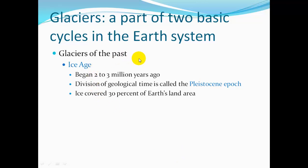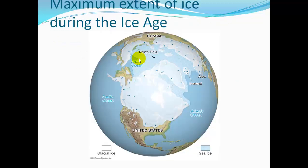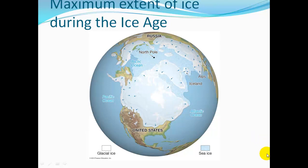Glaciers of the past: during the ice age, which began two to three million years ago — in the division of geologic time called the Pleistocene Epoch — ice covered 30% of Earth's land area, going quite deep into the United States. The bluer ice shown here is sea ice covering the ocean, and the white ice is glacial ice.